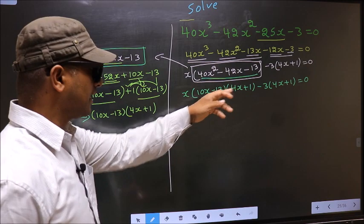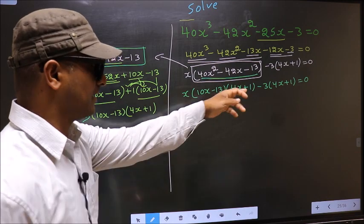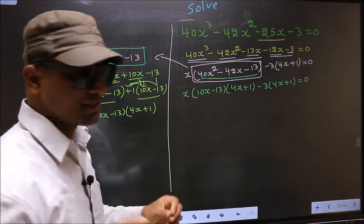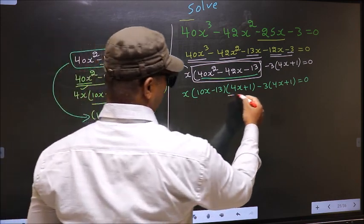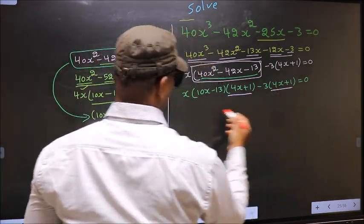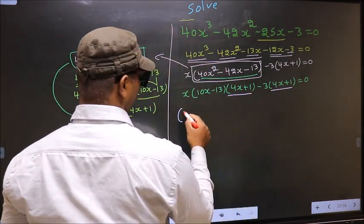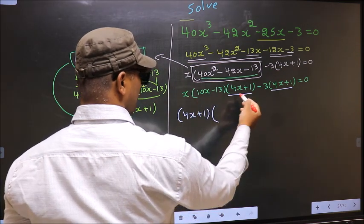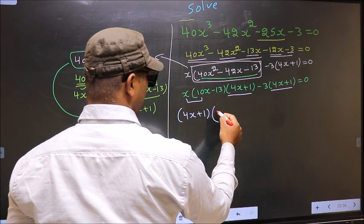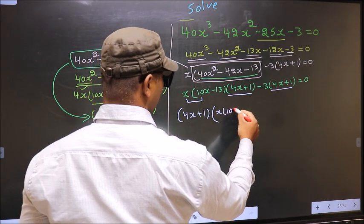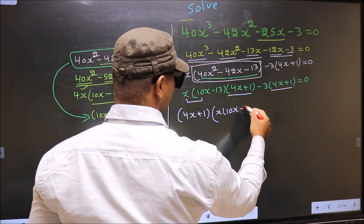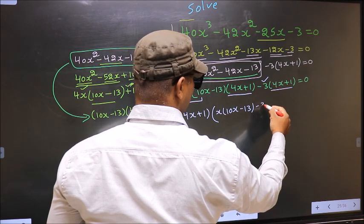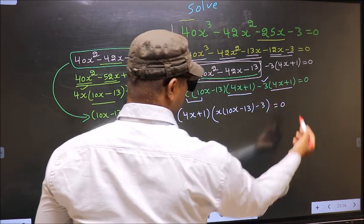From this entire equation, what can be taken out common is 4x plus 1. So you write 4x plus 1 outside. Over here, you are left with x times 10x minus 13. Over here, you are left with minus 3, equal to 0.